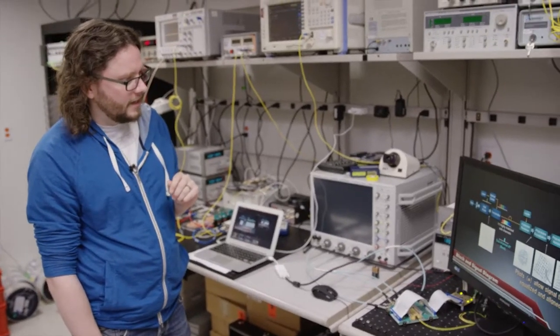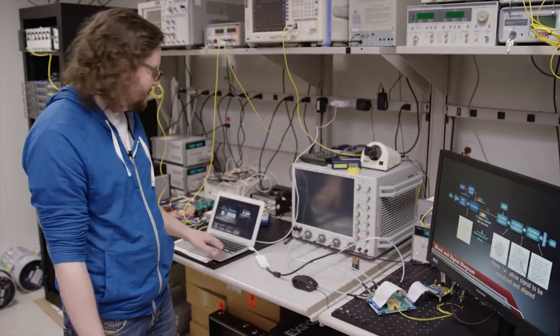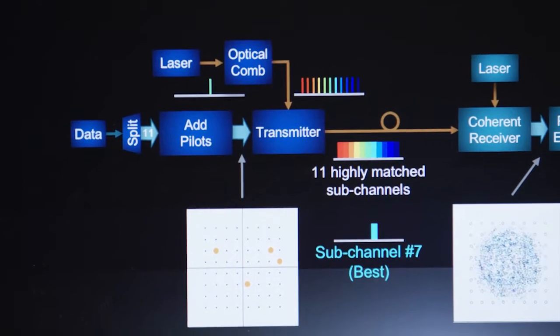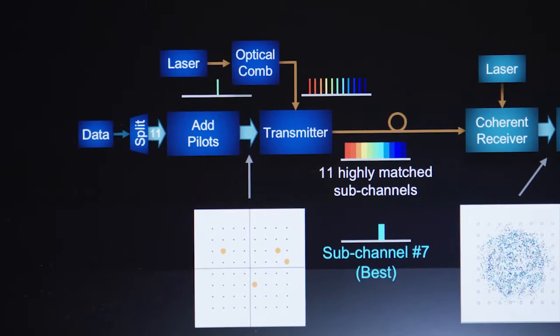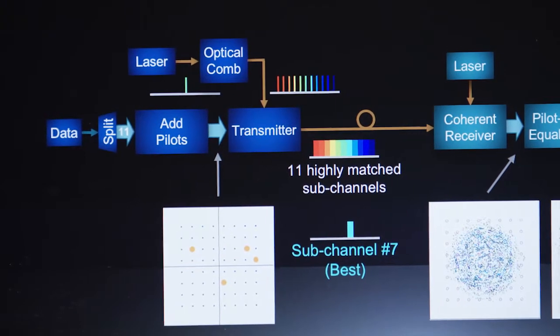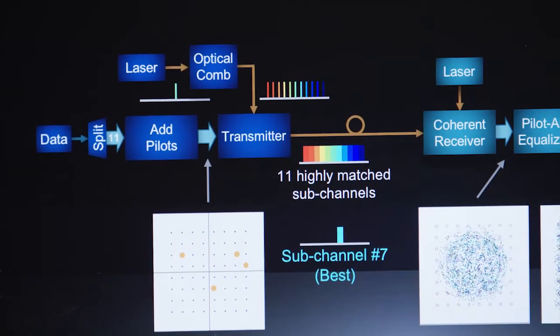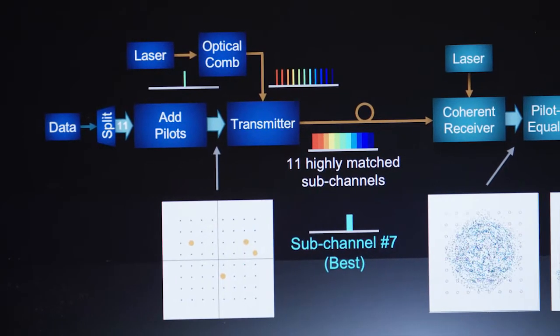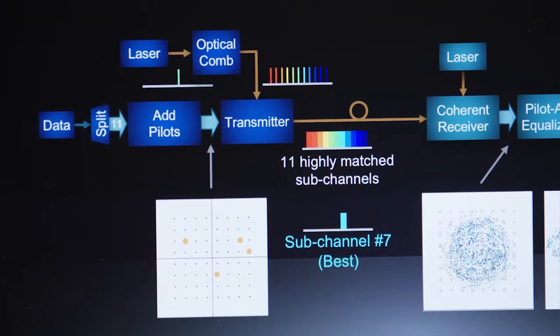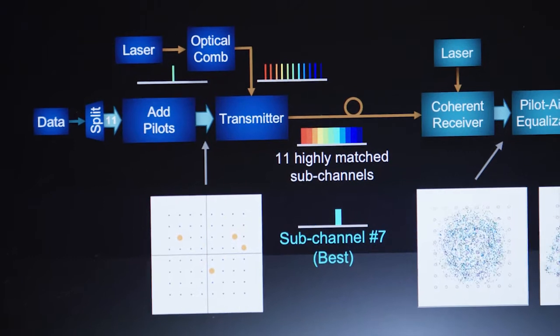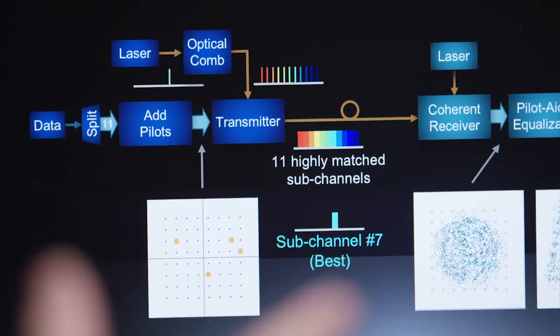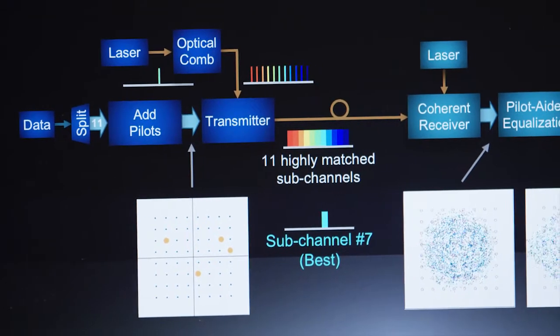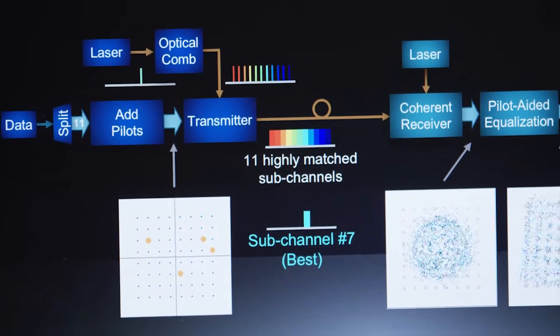So this is a greatly simplified schematic of the experimental setup. We have the data, which is a terabit of data, and we have some additional overhead for forward error correction coding. So that's where we add some redundancy that allows us to solve a bunch of equations at the receiver to figure out how to correct any errors that may have occurred in transmission. We then split this data into 11 channels or 11 sub-channels that we're going to modulate on one wavelength each, and then we insert some pilot symbols.